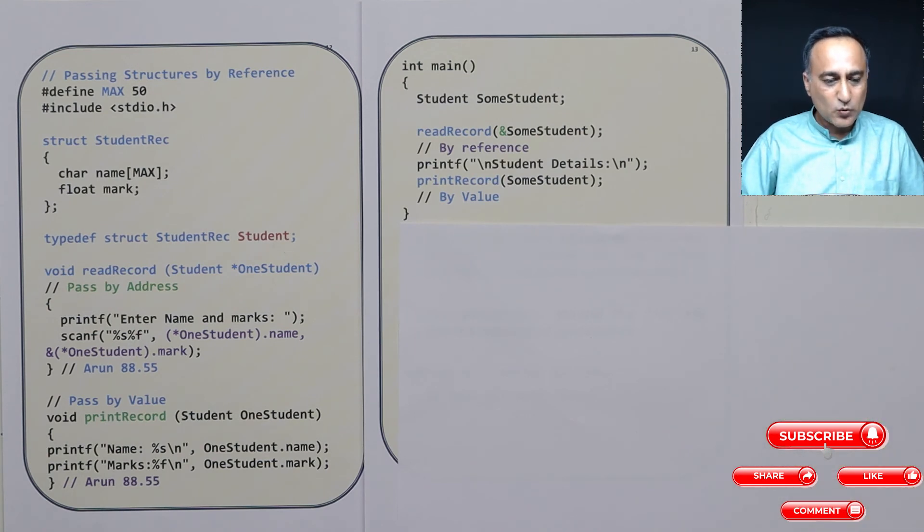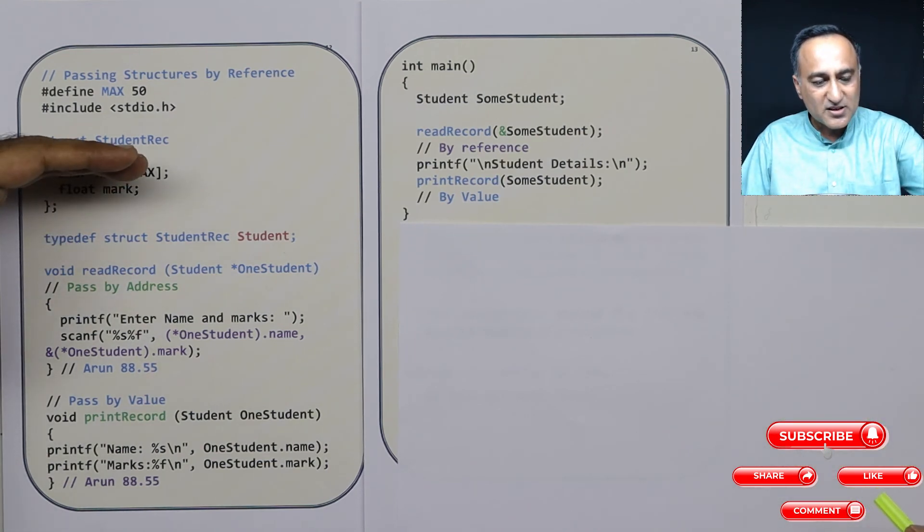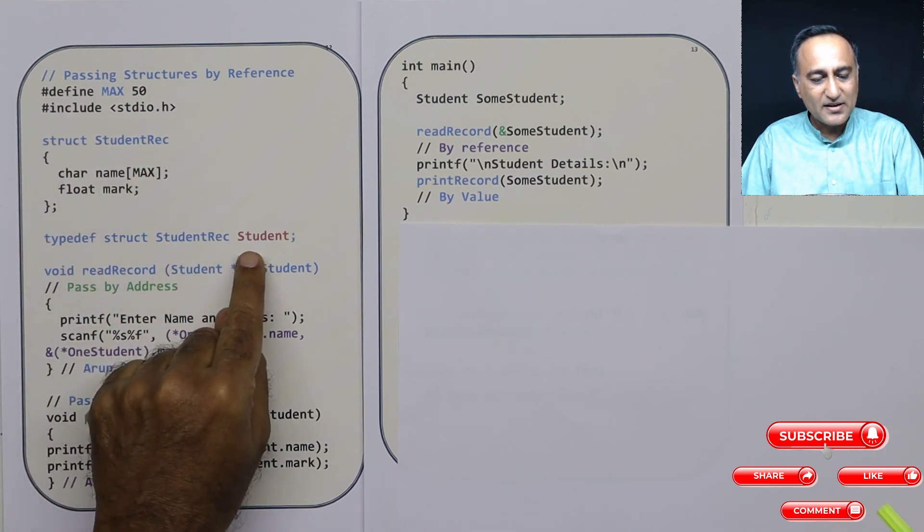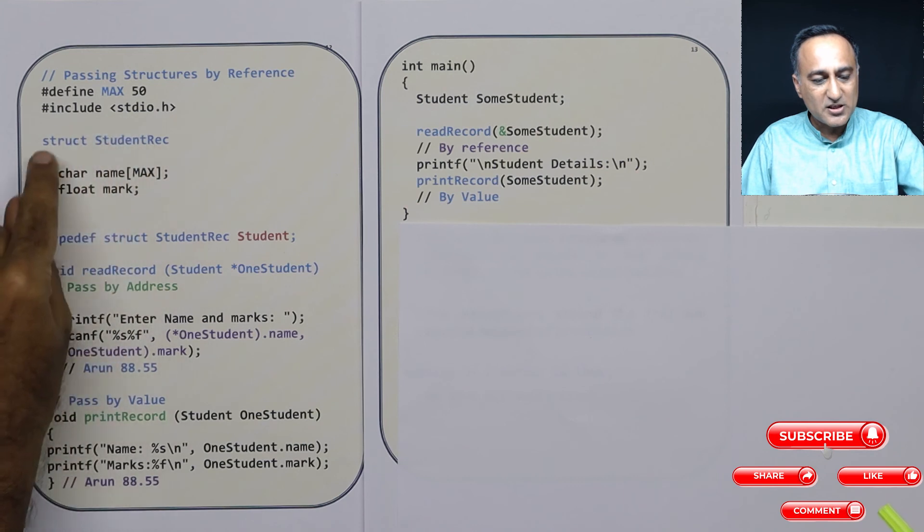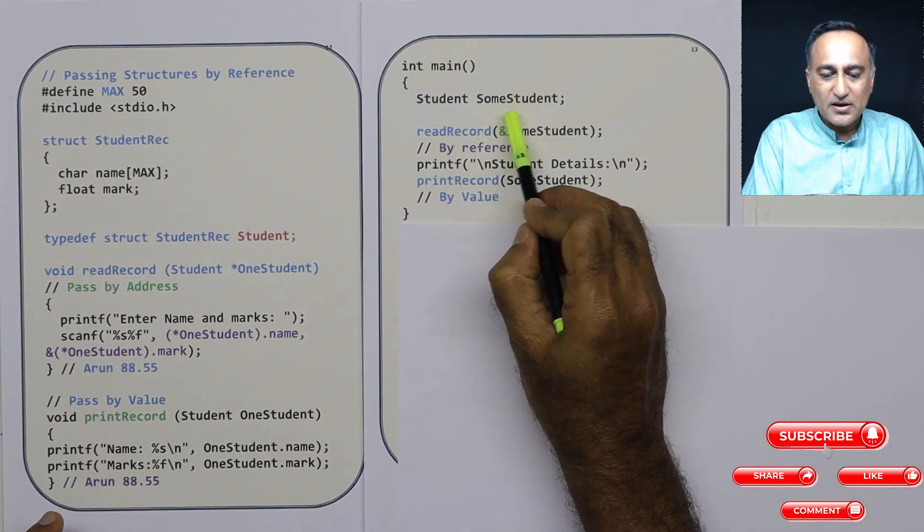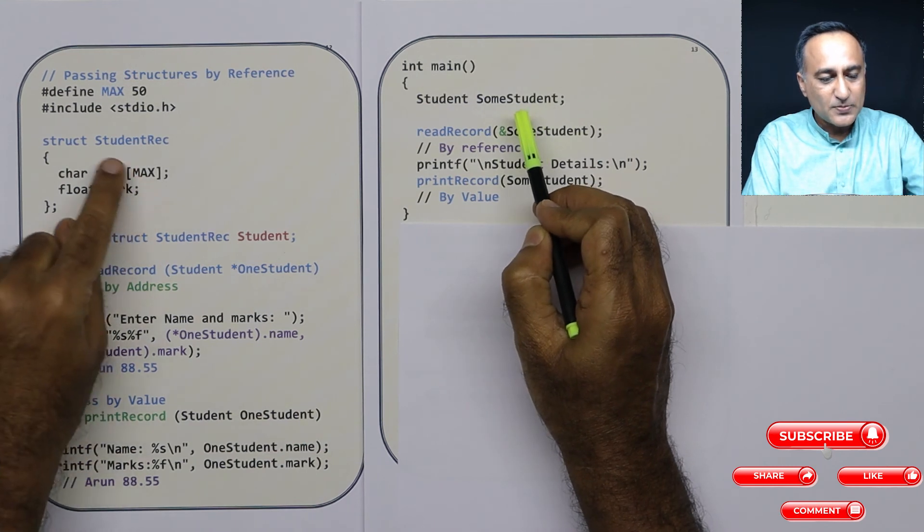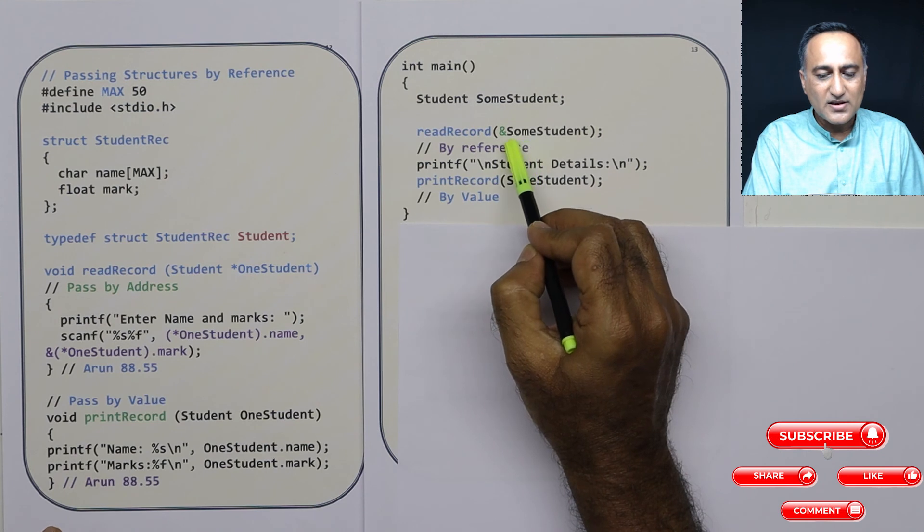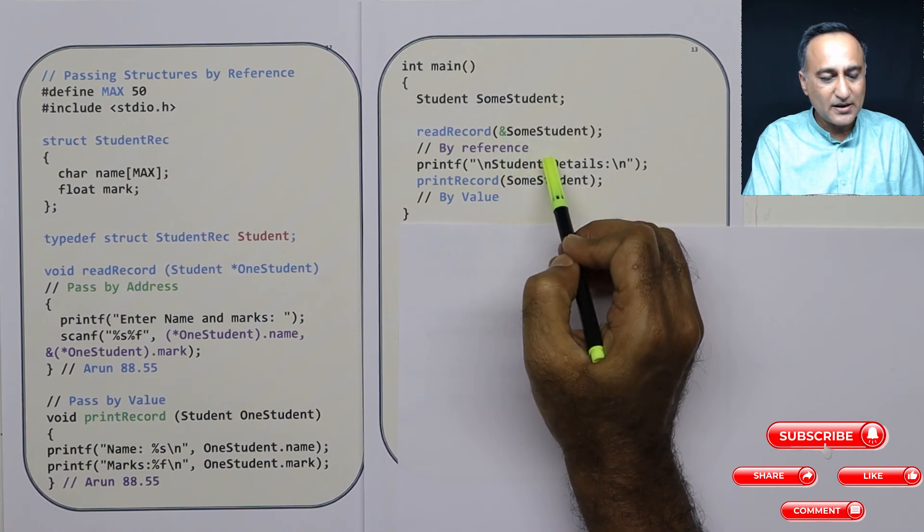Just to highlight and summarize what we did here, we created a structure with name and marks. Using typedef, I created a student which represents this particular blueprint. Then I declared a variable some student of this particular data type. Read record, sending the address of this particular structure.